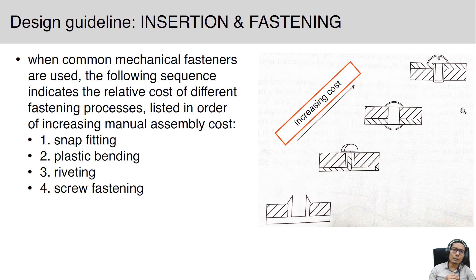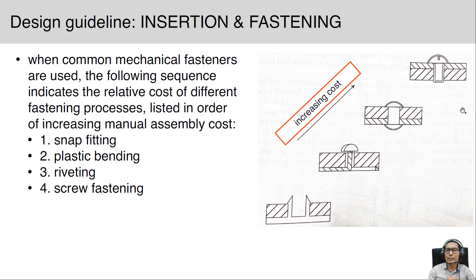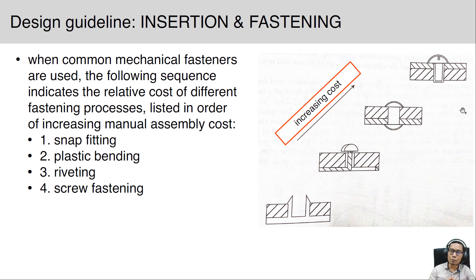When common mechanical fasteners are used, the following sequence indicates the relative cost of different fastening processes, listed in order of increasing manual assembly costs: first is snap fastening, second is plastic bending, third is riveting, and fourth is screw fastening. From snap fastening up to screw fastening, the cost increases — meaning snap fastening is much cheaper than screw fastening.